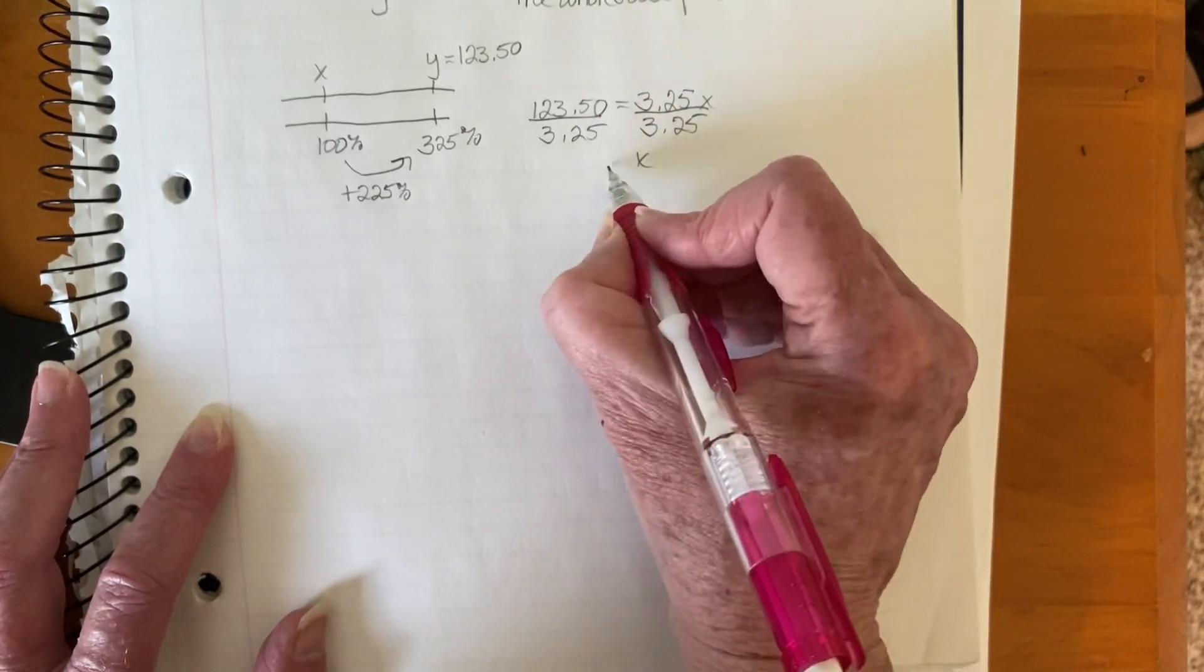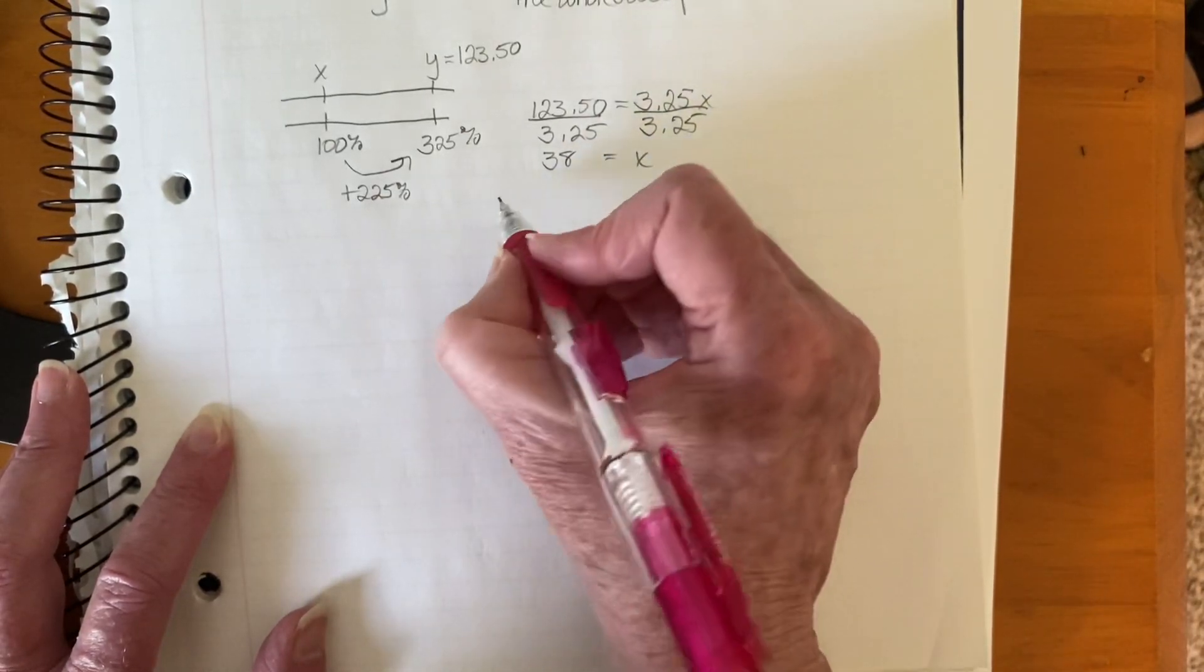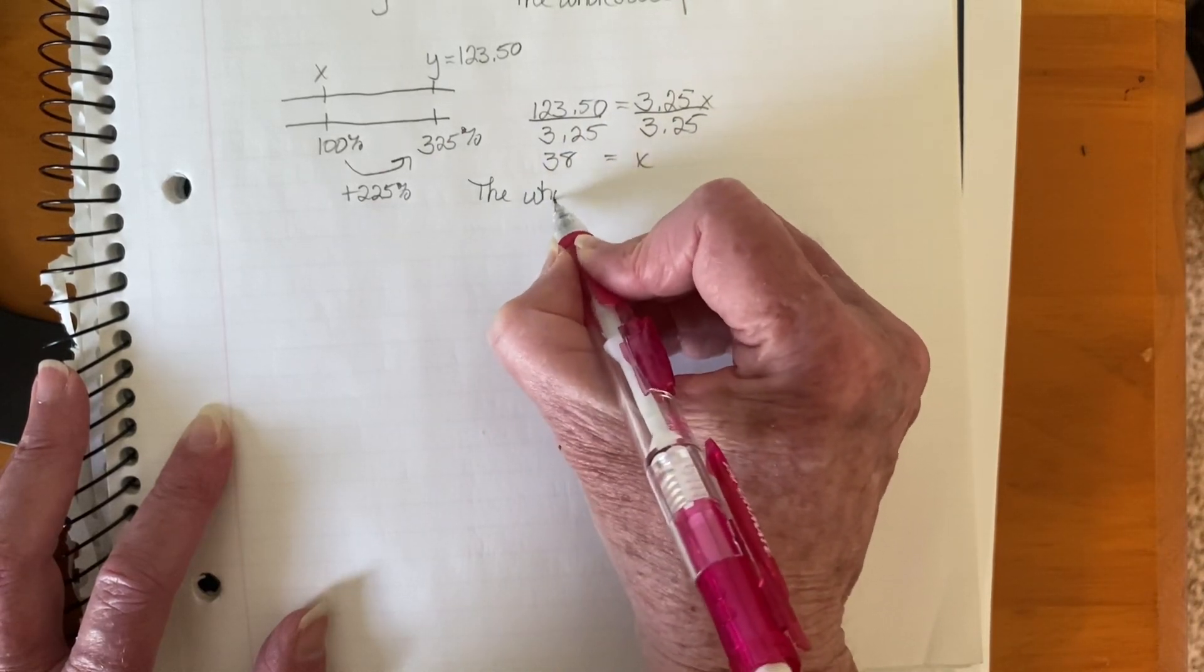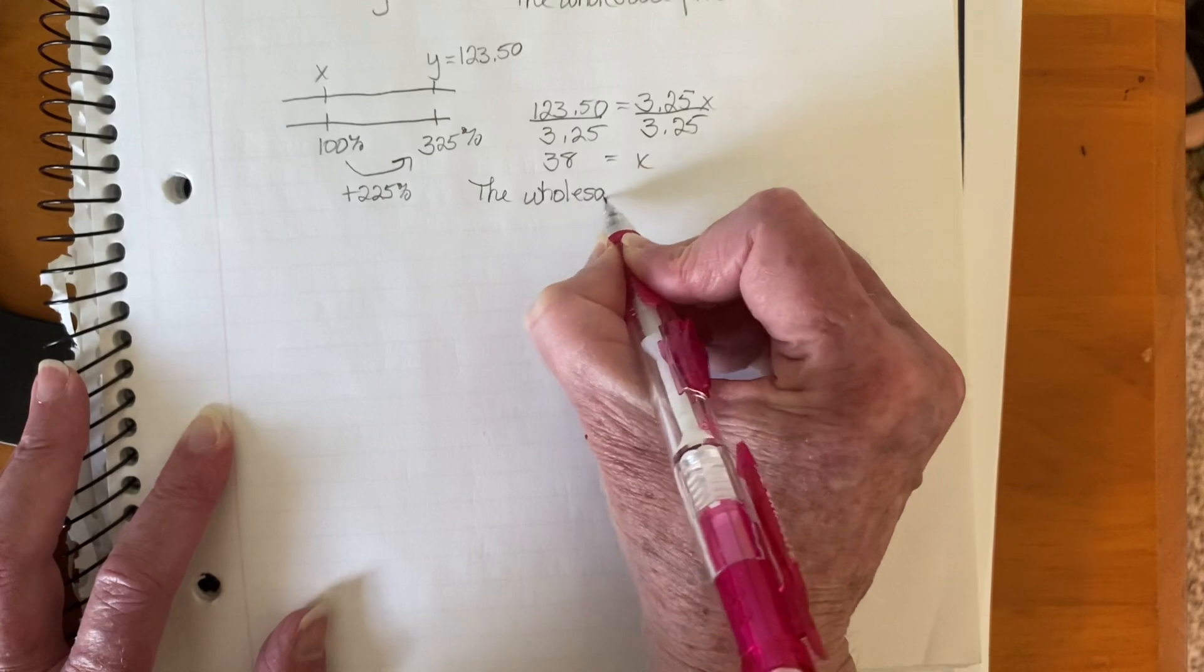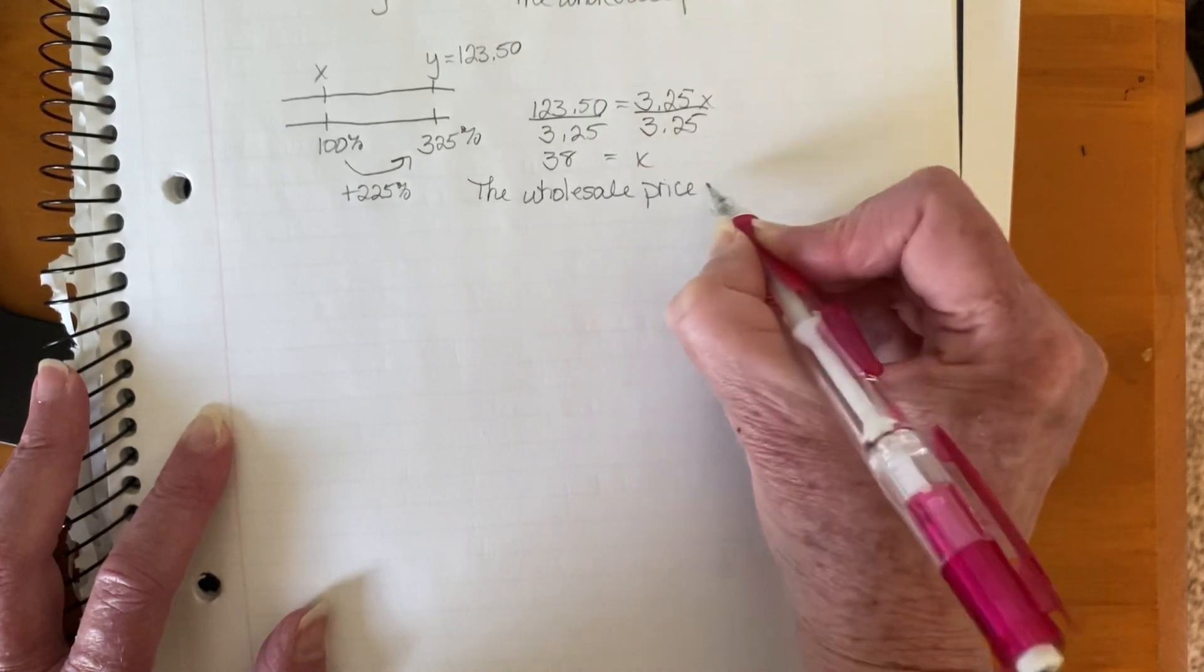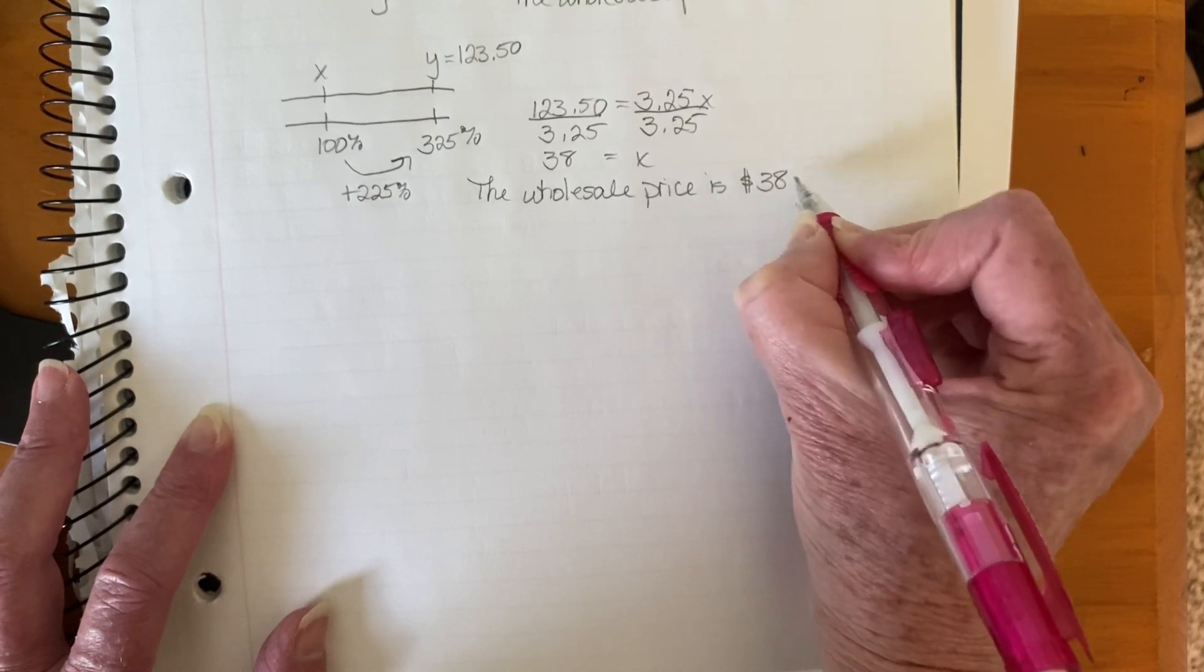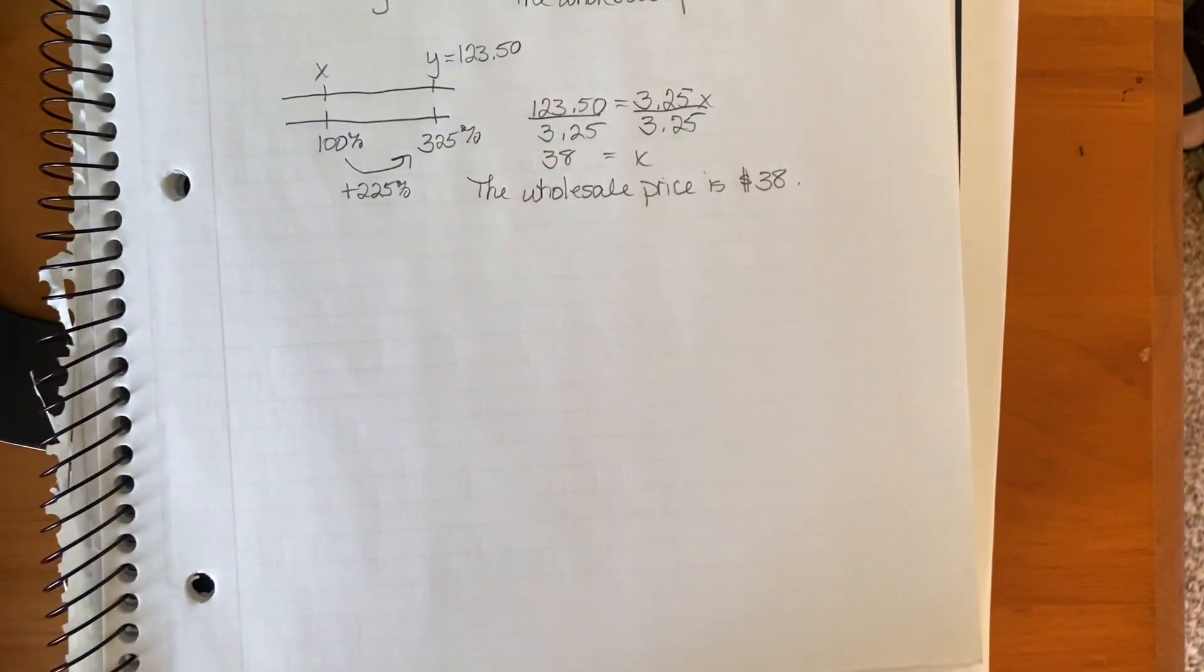So we end up getting X equals 38. So the wholesale price, the price the store paid for the boots is $38. I'll see you next time.